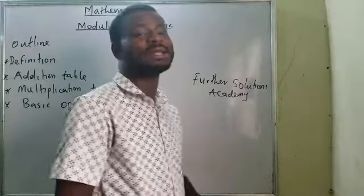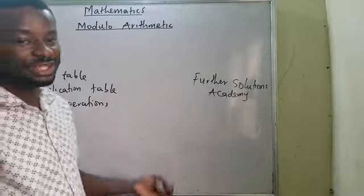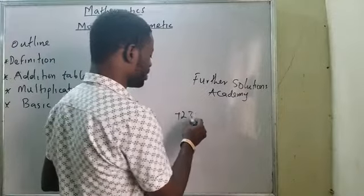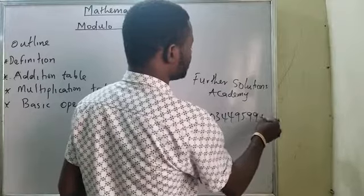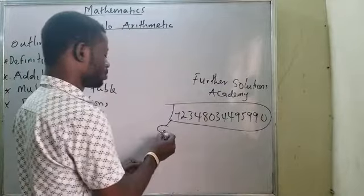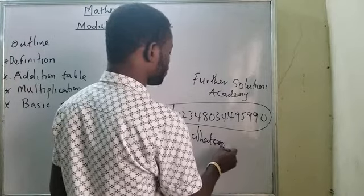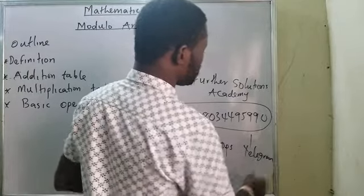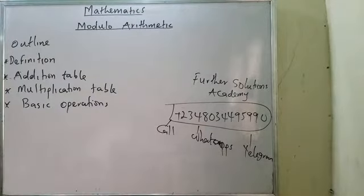It means you can come here and learn any topic of your choice: mathematics, physics, and chemistry. Just in case you want to reach us, you can make use of this line: 234803495990. On this line, you can call us, WhatsApp us, and also Telegram. We are also having our online classes at any level — just contact us and we will surely get back to you.